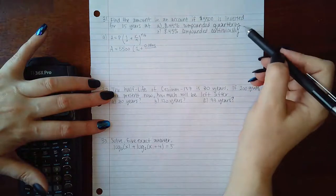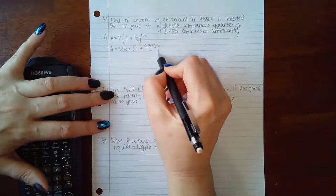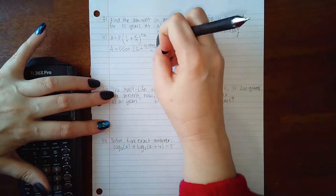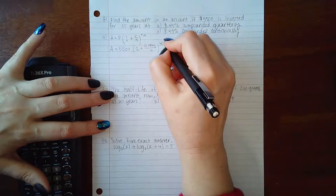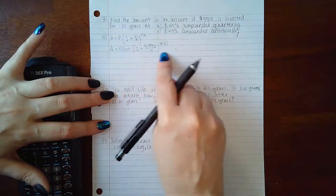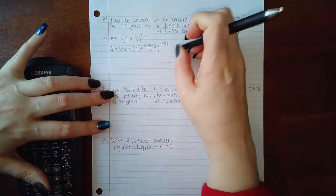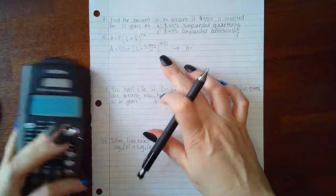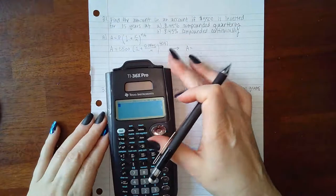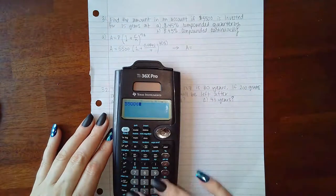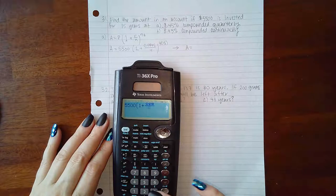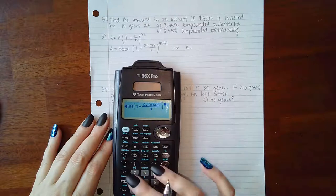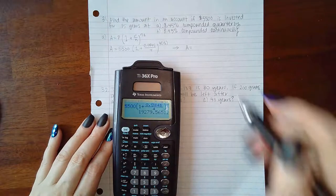The rate is 0.0845 and n is the number of times compounded per year. Quarterly means it will be compounded four times, so I have 4 times t. The time is 15 years. Since everything on this right-hand side is just operations on numbers, I can type everything into my calculator. So 5,500, parentheses, 1 plus fraction 0.0845 over 4, close the parentheses, raise it to 4 times 15.